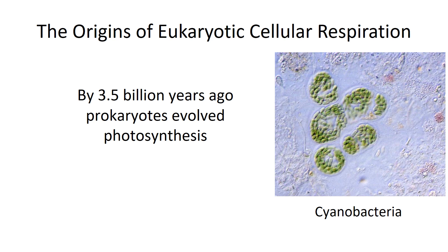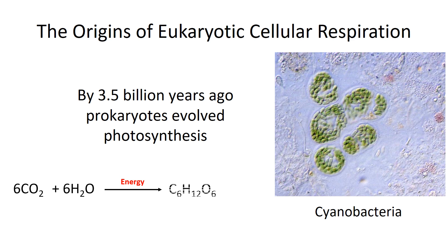Bacteria — specifically the cyanobacteria — evolved the ability to take carbon dioxide and water and use the energy in sunlight. What they did is they converted that energy in sunlight to potential energy and fixed carbon into organic molecules. And as a byproduct, they released oxygen to the atmosphere. Well, that has some profound consequences for our Earth.